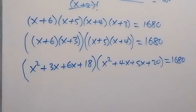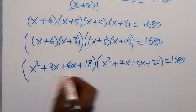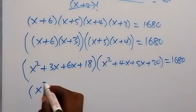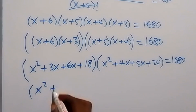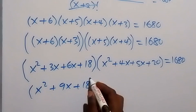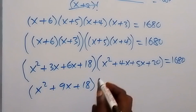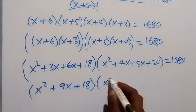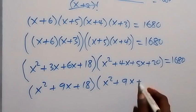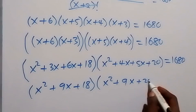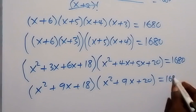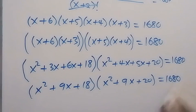So we have (x² + 9x + 18)(x² + 9x + 20) = 1680.